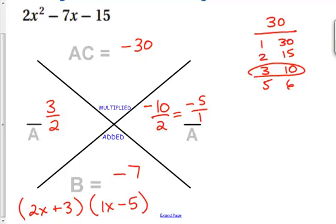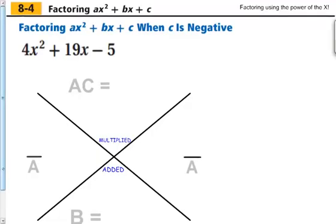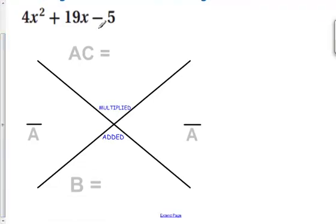I'm going to show you one more and let you guys try some. In this case, we have a negative 5 times 4. It's going to give us negative 20. But we have a positive 19 down here. So it's a little bit different situation.